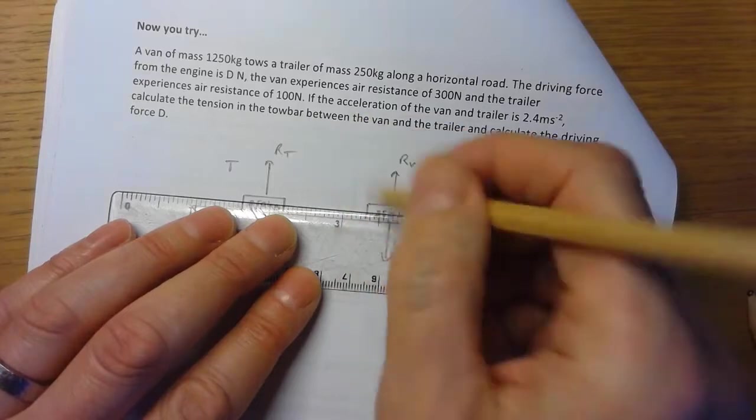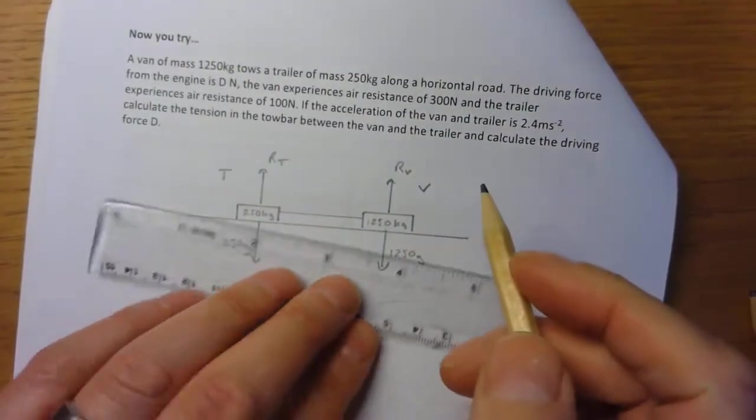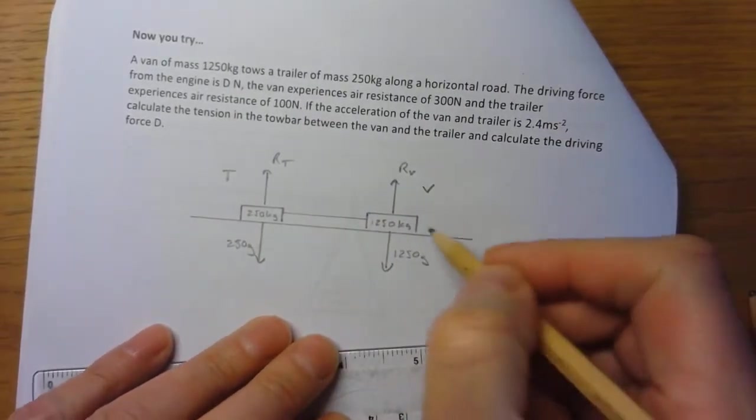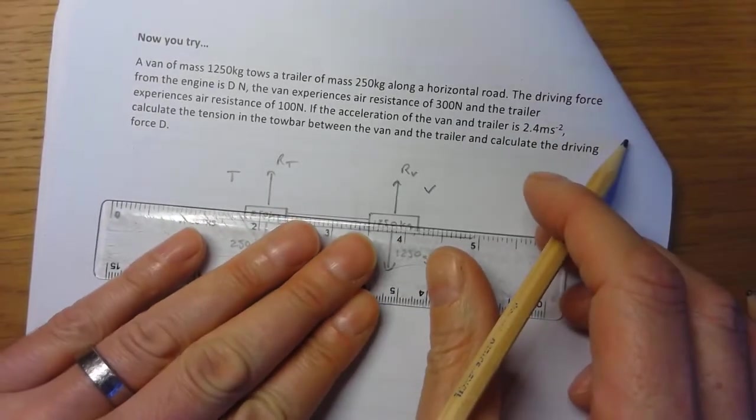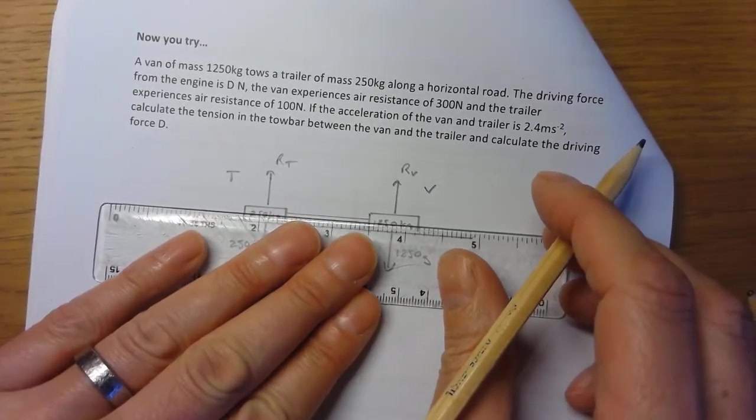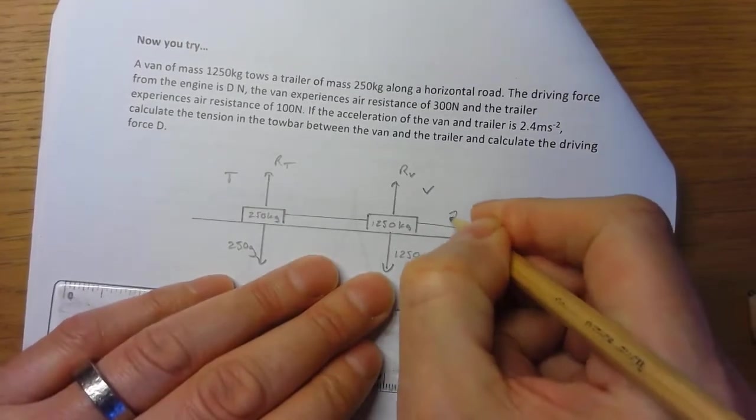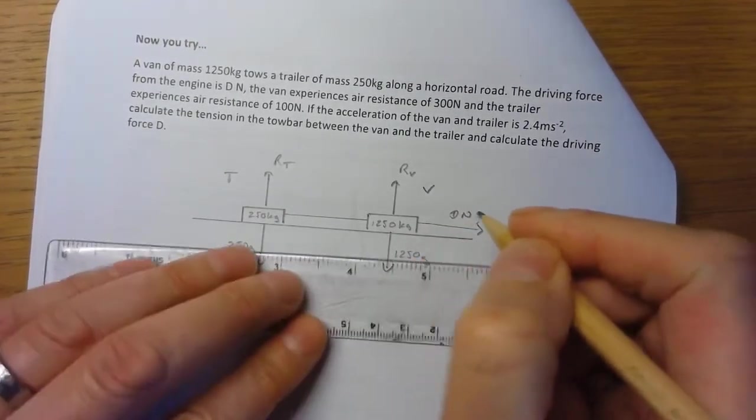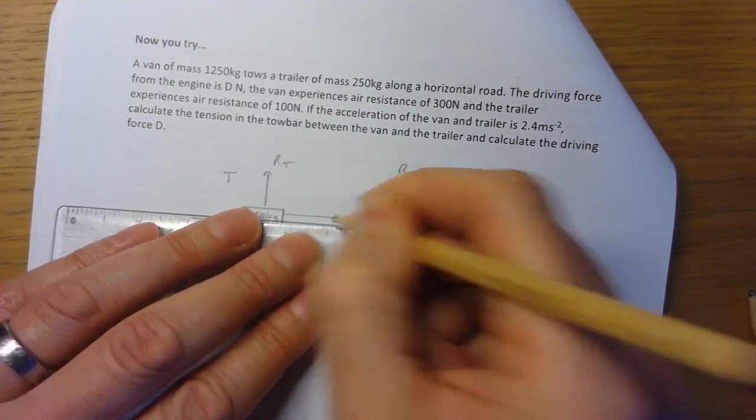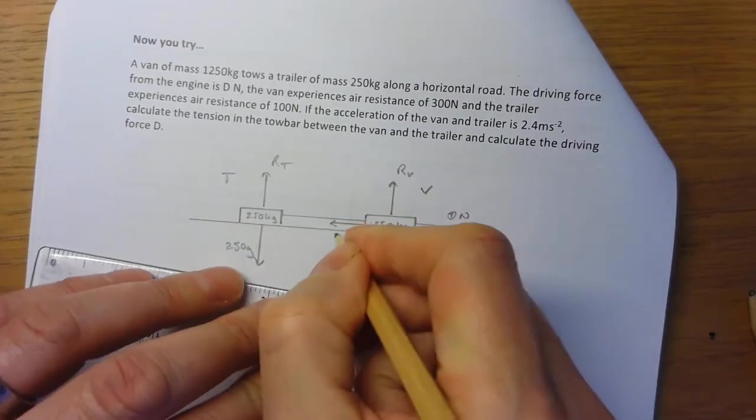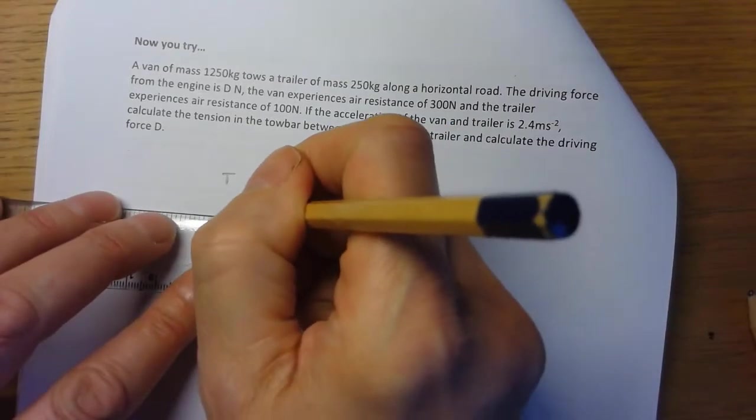I have a tow bar between the van and the trailer. I have a driving force on the van of D newtons. I have an air resistance on the van of 300 newtons, and I have an air resistance on the trailer of 100 newtons.